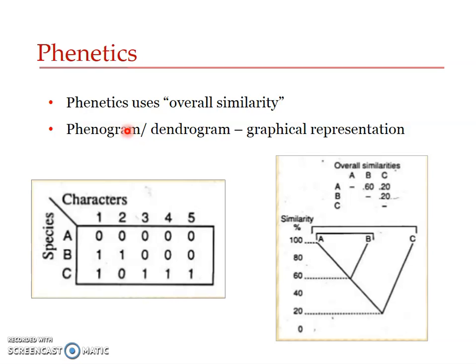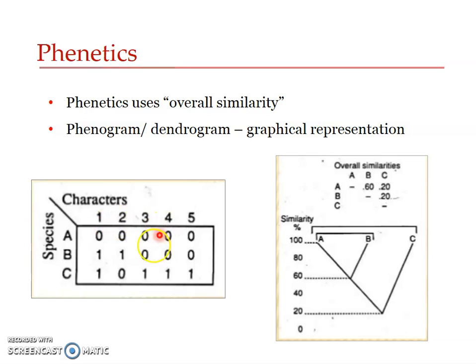As already mentioned, phenetics involves two aspects. First, we find out all the characters and compare species with respect to the presence or absence of each character. There is a numerical evaluation of the morphological character similarities of organisms, and then based on this we classify the organisms based on similarities.